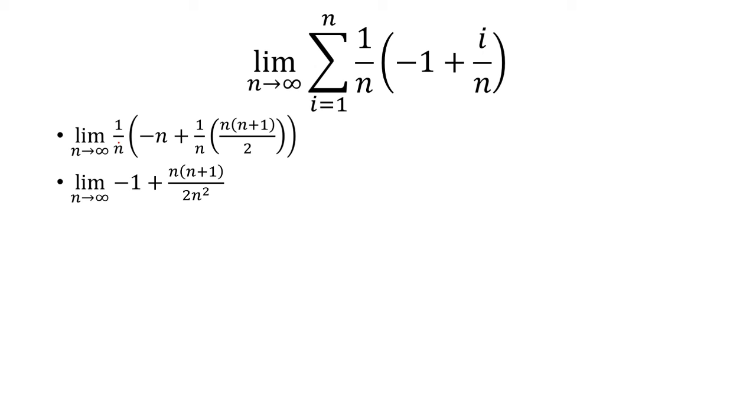Now we can distribute the 1/n, so we have 1/n times -n, that's -1. And the top we have n times (n+1), so we'll multiply the bottom by n times 2 to get 2n². We'll distribute out the n to both the n and the 1, and then we'll divide everything by n². So when n approaches infinity we get -1/2 as our limit, which is also equivalent to the integral that we found.